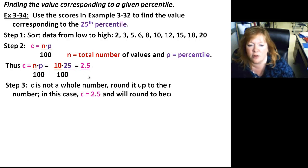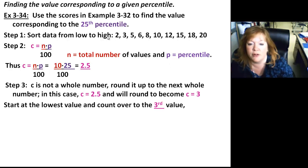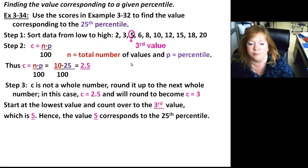In this case, my locator C is not a whole number. So what you do if it's not a whole number is you round it up to the next whole number. In this case, it will be 3. And then all you have to do is count from the lowest value over 3. So this is first, second, third value. And so 5 is your third value, and 5 corresponds to the 25th percentile. That's it.